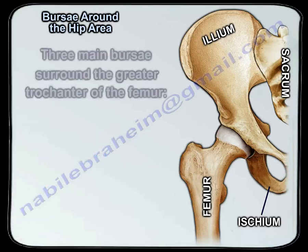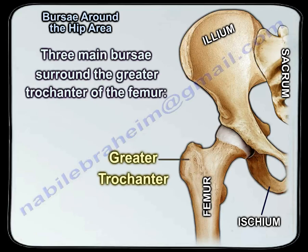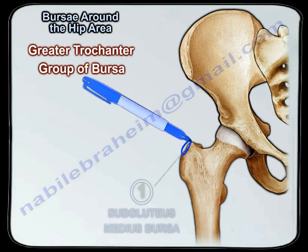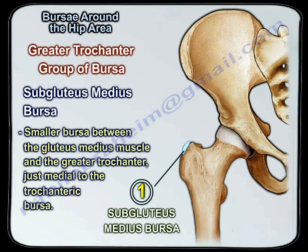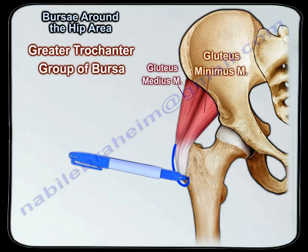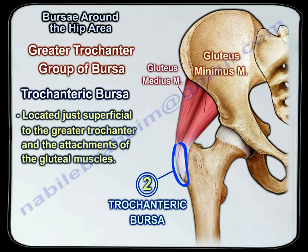Three main bursa surround the greater trochanter of the femur. The first is the subgluteus medius bursa, a smaller bursa between the gluteus medius muscle and the greater trochanter, just medial to the trochanteric bursa. The second is the trochanteric bursa, located just superficial to the greater trochanter and the attachments of the gluteal muscles.